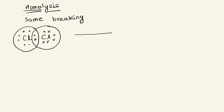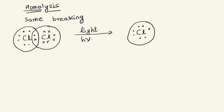If this bond breaks in such a way — take the chlorine molecule as an example — in the presence of a reagent or some conditions, say in the presence of light, this chlorine molecule breaks such that each one takes its own electron. Chlorine atom one goes away with its electron, and chlorine atom two goes away with its own electron, shown here in red and black color to distinguish between the two.